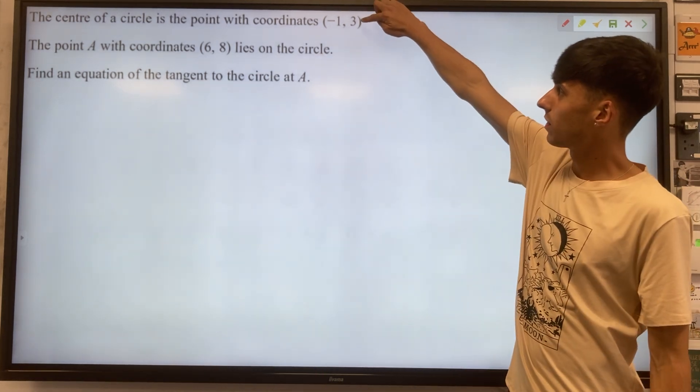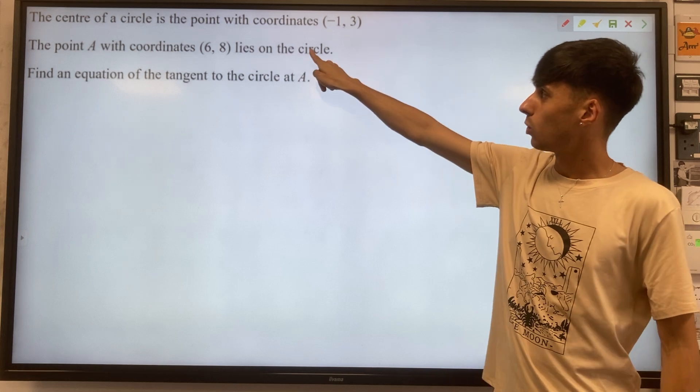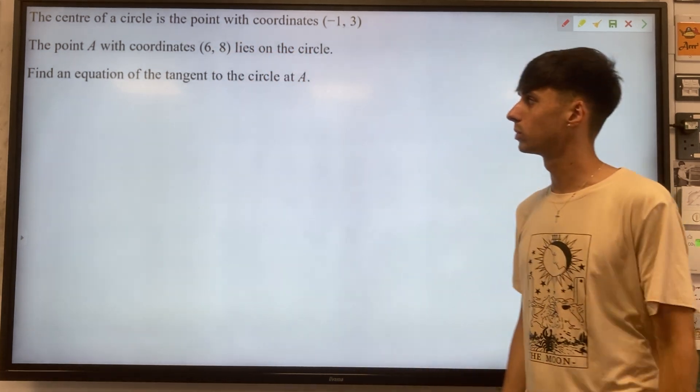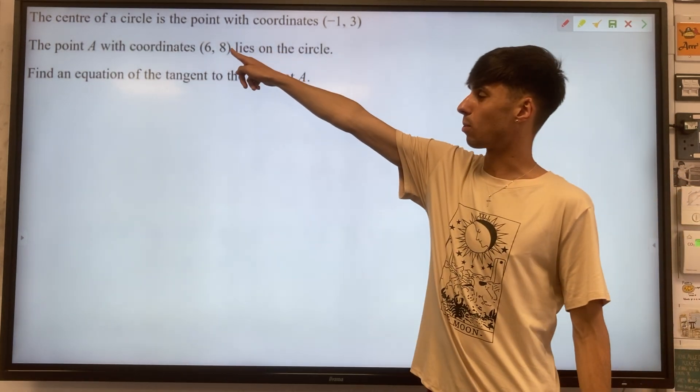In this question we get given a circle with centre minus 1, 3. We get given a point 6, 8 that's on the circle and we want to find the equation of the tangent to the circle at this point.